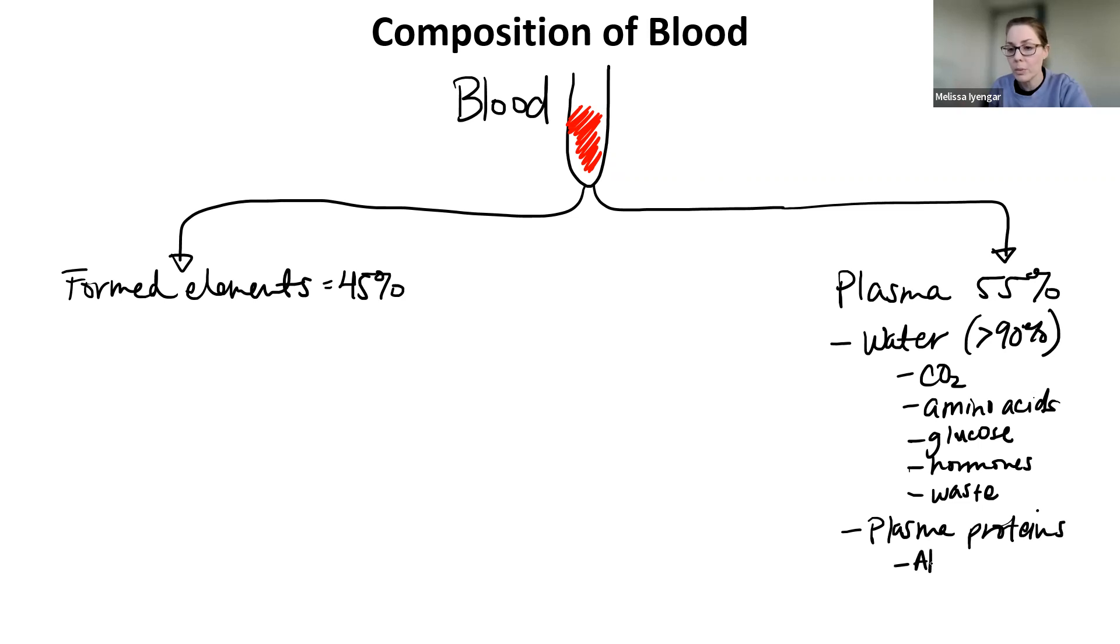So the purpose and the function of the plasma is that it's going to surround our formed elements. And it's going to hold everything that we're going to transport. So that's why plasma is going to be made of water in very high quantities. Basically greater than 90%. And then inside of that water, you're basically going to hold what we call solutes or substances that you have dissolved. And that includes things like carbon dioxide. That includes things like nutrients, like amino acids, things like glucose, all those sorts of things. You can have hormones, which we'll talk about later. You can have waste. Again, we'll talk about that later. But you want to know it's there.